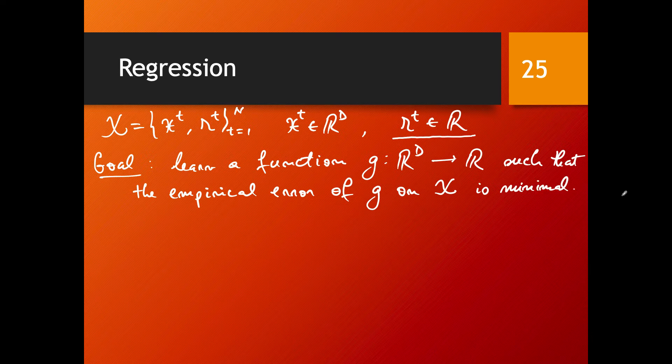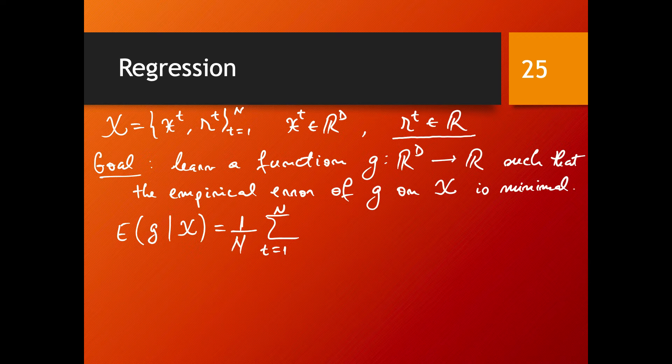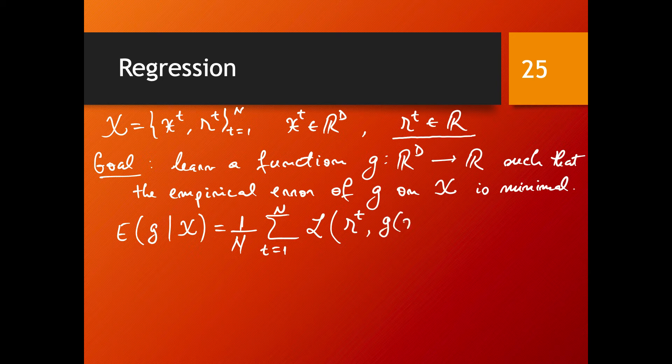The empirical error of this function G given the data set X is simply the average of the error this function is making on each data point. On a data point, the error is going to be some sort of a loss function measuring the distance between the real label of that data point and the prediction of my function on that data point.